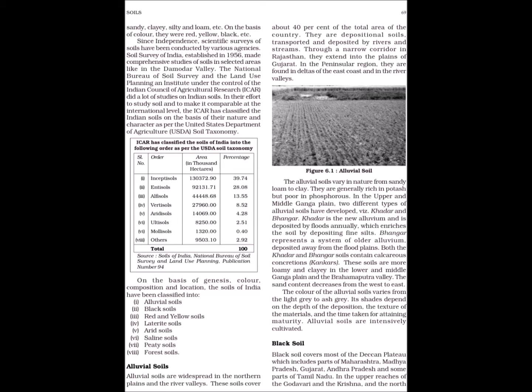In the upper and middle Ganga plain, two different types of alluvial soils have developed — Khadar and Bhangar. Khadar is the new alluvium and is deposited by floods annually, which enriches the soil by depositing fine silts. Bhangar represents a system of older alluvium, deposited away from the flood plains. Both the Khadar and Bhangar soils contain calcareous concretions. These soils are more loamy and clayey in the lower and middle Ganga plain and the Brahmaputra valley. The sand content decreases from the west to east.